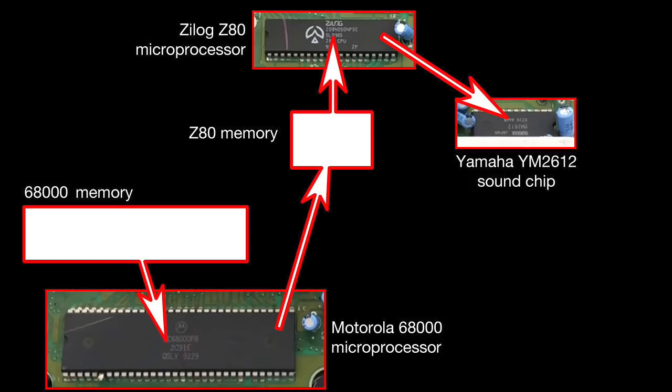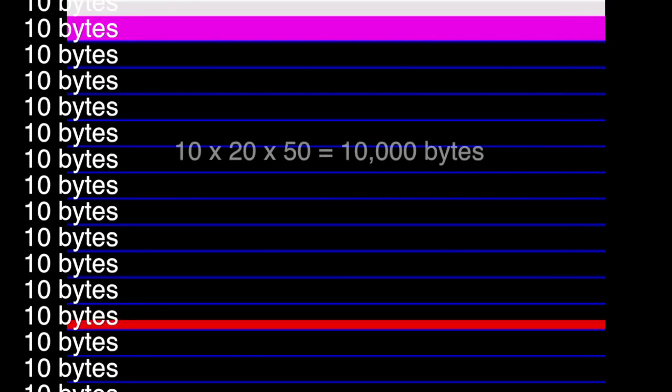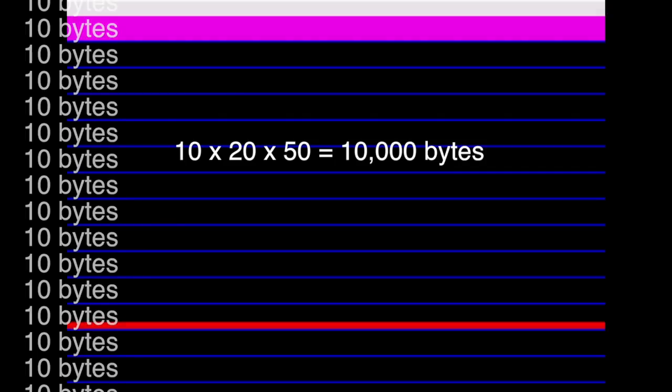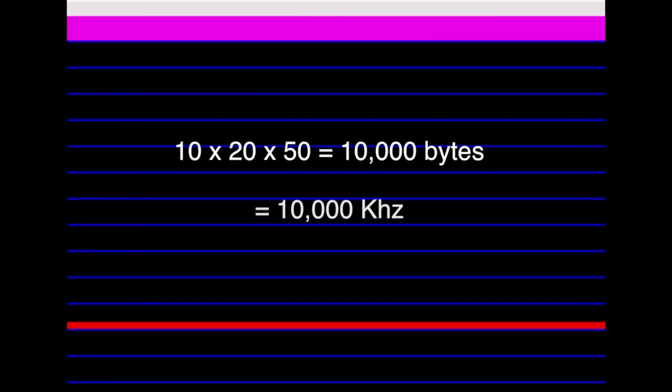To get around this, we've decided to send a tiny amount of data extremely often, so instead of the music stopping, it would just pause for a tiny fraction of time, resulting in just a slight quality loss that's not really noticeable at the sample rates we're playing with. The blue lines on this screen are horizontal interrupts — on each of those lines, as the screen is being drawn, we copy around 10 bytes of data to the Z80's memory. Over a frame we do this 15 to 20 times, meaning over a second we copy around 10,000 bytes to the Z80, resulting in a playback sample rate of around 10kHz.